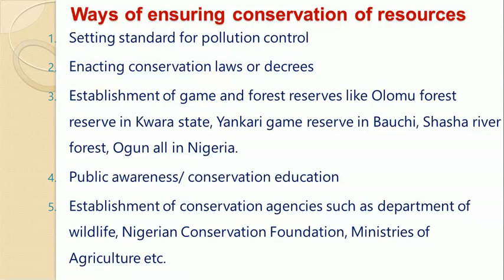Let's talk about the ways of ensuring conservation of resources. Number one: the government should set standards for pollution control, specifying safe amounts of pollutants released into the environment. Number two: enacting conservation laws or decrees to check indiscriminate use of resources and illegal mining of minerals. Number three: establishment of game and forest reserves, such as the Olumo Forest Reserve, Yankari Game Reserve in Bauchi, and Shashari River Forest, all in Nigeria — special places where rare animals can be kept for research and future use.